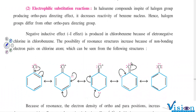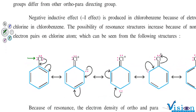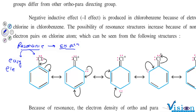Welcome back. We have just seen SN reactions of haloarenes. Now what we are going to see is electrophilic substitution reactions of haloarenes. Just now we had seen resonance — that resonance which was responsible for the difficult SN reaction. The same resonance is responsible for easy electrophilic substitution reactions.